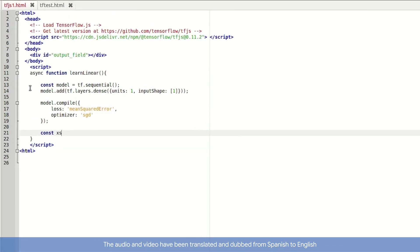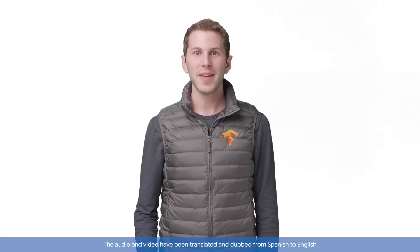I'll create a tensor for the Xs by using tf.tensor2d. You'll see that the first element in this is my array of X values, minus 1, 0, 1, etc. The second parameter is the shape of this array, 6 rows, 1 column. I'll then do the same for my Ys, giving my Y values and the shape 6 rows, 1 column.